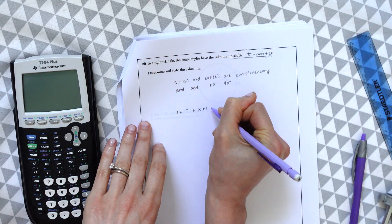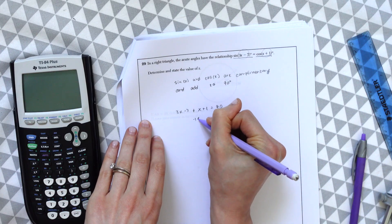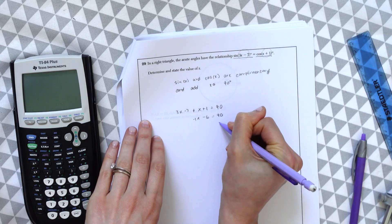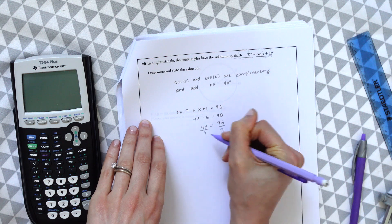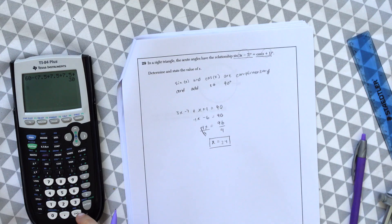So we'll get 4x minus 6 equals 90, and we get x is equal to 24.